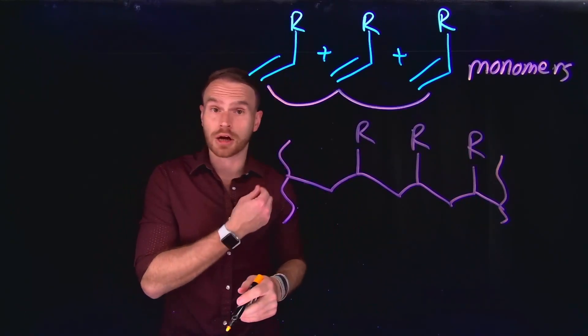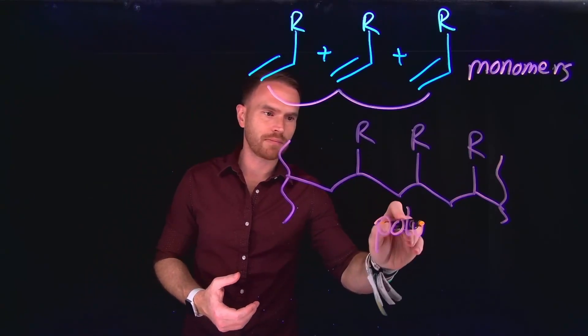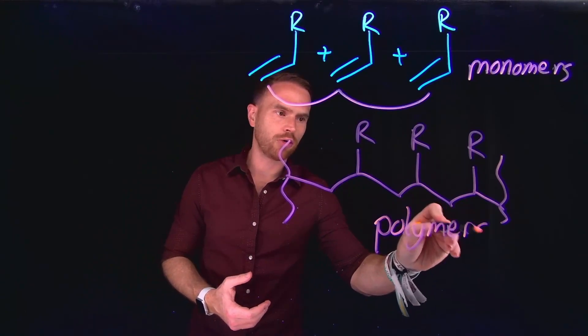Several others make up the clothes that we wear or the plastic that we see in the universe. And once these individual building blocks come together, they are called polymers.